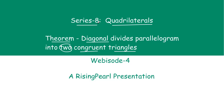In our last series, Series 7, we talked about triangles. We have seen what congruent triangles are, and we have gone through many different congruence rules like SAS, ASA, AAS, SSS, RHS, etc. We hope that you have gone through those, because in this presentation we are going to use some of those congruence rules when we prove this theorem.